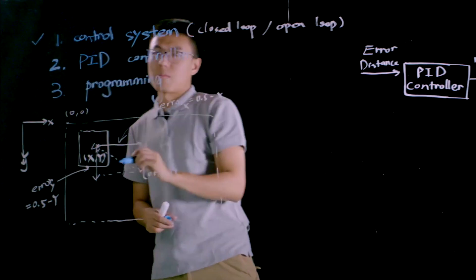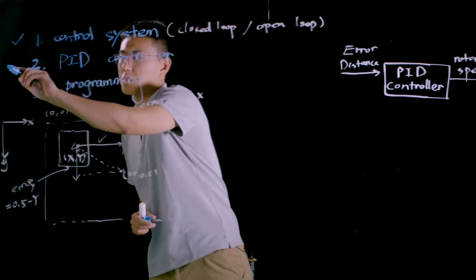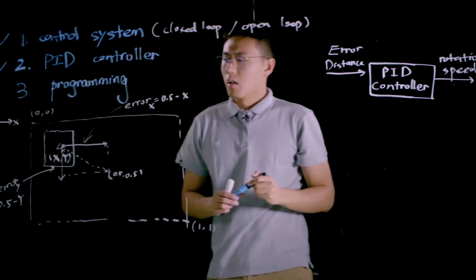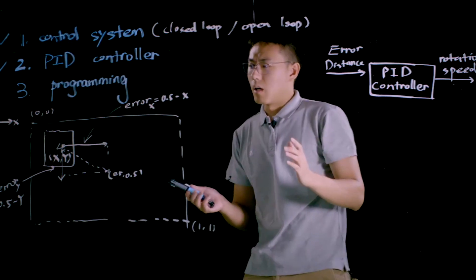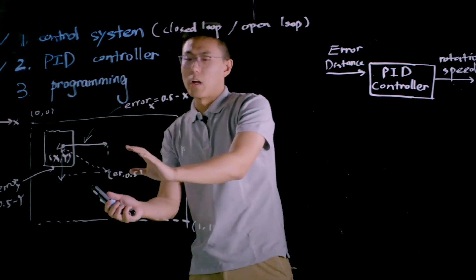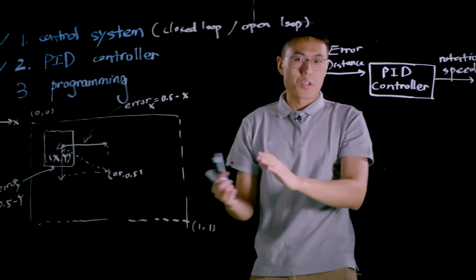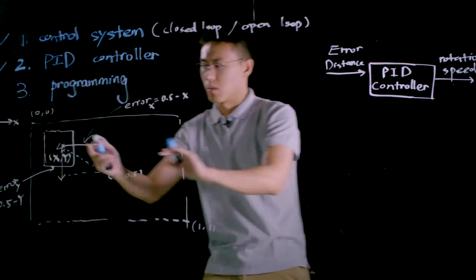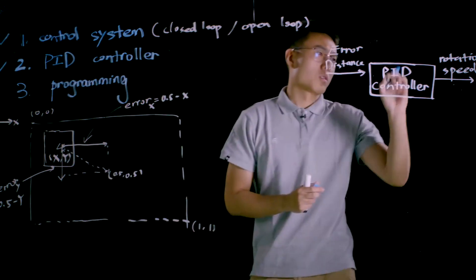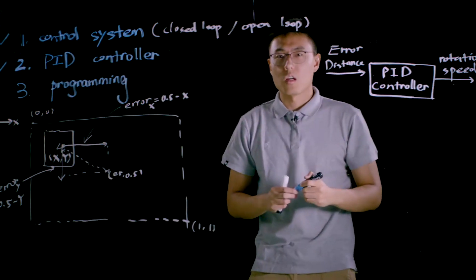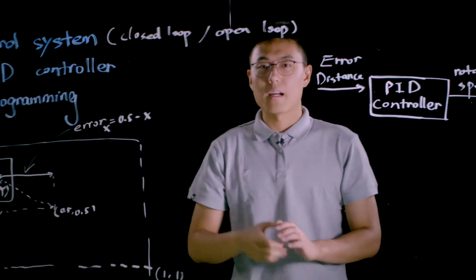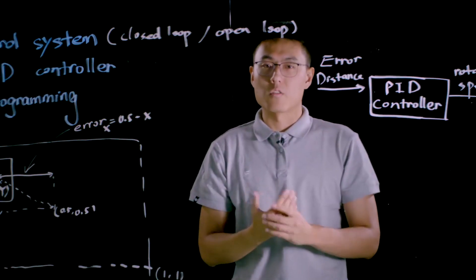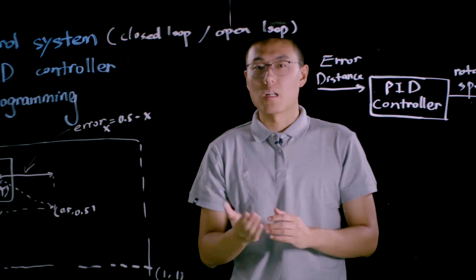And next we should learn something about the PID controller normally used in the control system. Let's go back to the object tracking example at the very beginning. The PID controller used in this system is responsible for eliminating the error distance, which is over here, and output the rotational speed of motors of S1. There are two PID controllers governing the motion of gimbal, one for pitch motor, another one for yaw motor.